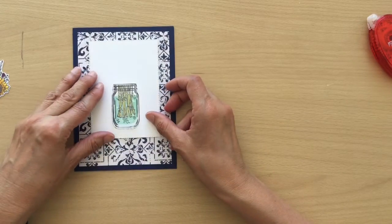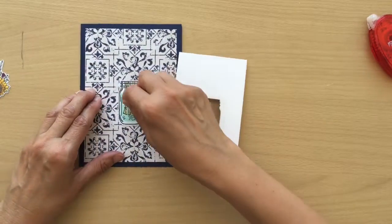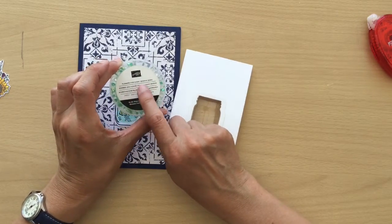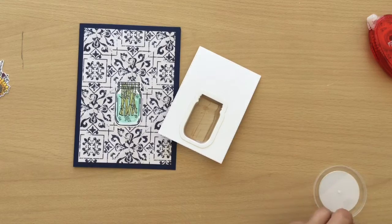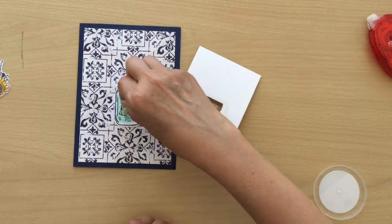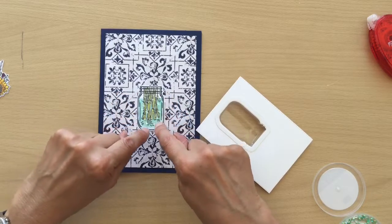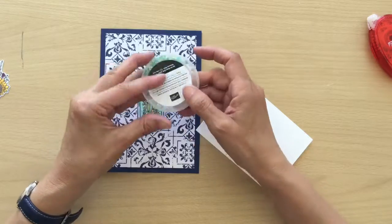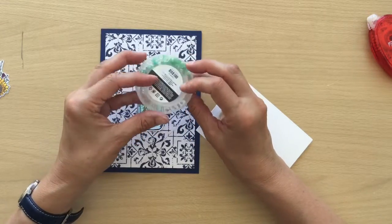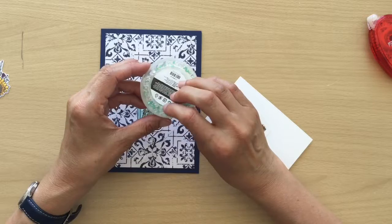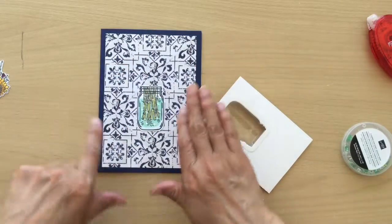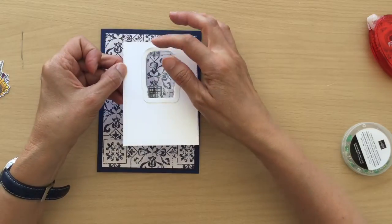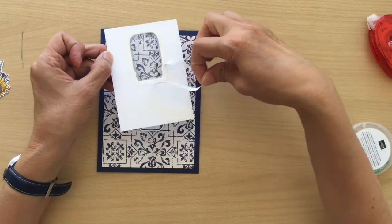So that is obviously going to pop over like this. Next we want to fill the jar with our Flowers for Every Season gems. I'm actually only using the clear ones for this card. These have got some really pretty ones in as well, but I believe this is the new In Color—this green I think is Just Jade. I don't have a lot of green in this card, so I just wanted to put some of the clear ones in.